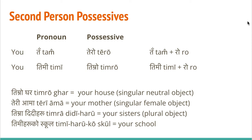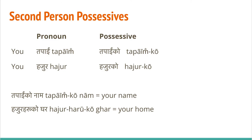'Timi' and 'ton' are similar to 'ma' and 'hami'. Examples: 'timro ghar' is 'your house' because 'ghar' is neutral. 'Teri aama' is 'your mother' — though I don't recommend using 'teri aama' much, since it comes from 'ton' which I suggest avoiding. 'Timra didiharu' means 'your sisters'. For cases of great respect, 'tapai' and 'hazur' only use 'ko', 'ki', 'ka'. So it would be 'tapai ko naam' — 'your name'; 'tapai ko naam ke ho' — 'what is your name?'. 'Hazurharu ko ghar' means 'your home'. For a female object, that would be 'tapai ki aama' — 'your mother'.